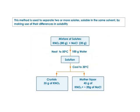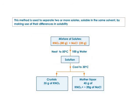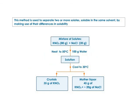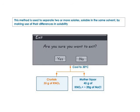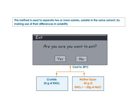Fractional crystallization: this method is used to separate two or more solutes, soluble in the same solvent, by making use of their differences in solubility. For example, potassium nitrate and sodium chloride are both soluble in water. Heat the mixture of potassium nitrate, sodium chloride, and water, then cool to 30 degrees Celsius. The solubility of potassium nitrate at 30°C is 45 grams, so 80 minus 45 equals 35 grams of potassium nitrate crystallizes out. The solubility of sodium chloride at 30°C is 20 grams, so all sodium chloride remains in solution. On repeating the process, another 35 grams of potassium nitrate separates out. The process of heating the mother liquor and cooling is repeated to fully separate the components.